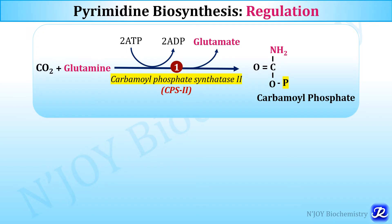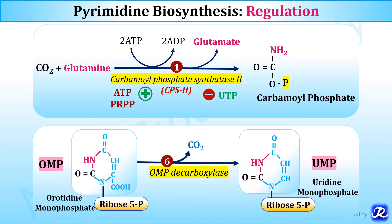Pyrimidine biosynthesis is regulated at two steps. First, CPS2 — the regulatory enzyme — is activated by ATP and PRPP and inhibited by UTP. Second, OMP decarboxylase, which forms UMP from OMP, is inhibited by UMP and CMP, providing feedback inhibition of the pathway.